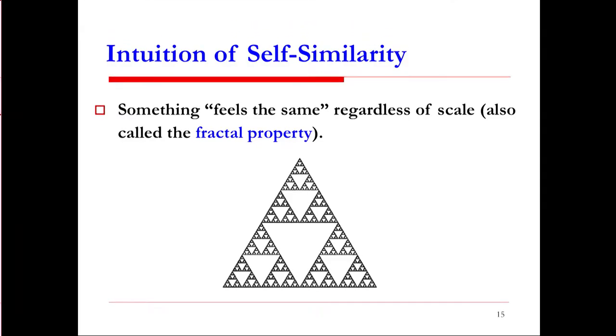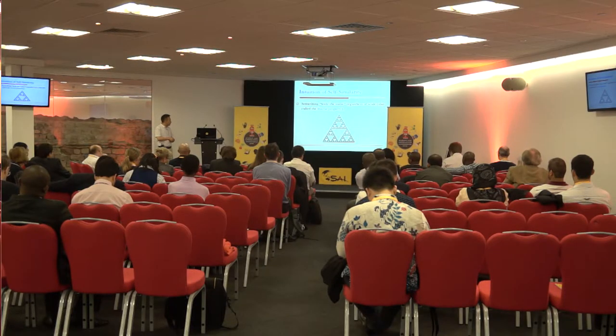To present the analytic model, the first question is: what is self-similarity? Self-similarity means something looks fairly the same regardless of scale — also called fractal properties. This figure gives a good intuition. The largest triangle consists of many smaller triangles, but each smaller triangle has the same shape and structure as the largest one. No matter how big or small the triangle is, it always looks the same. This is self-similarity.